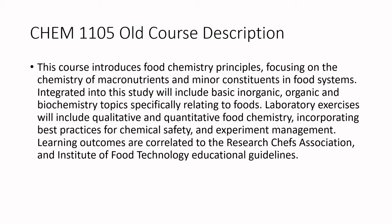I want to walk through one of the course descriptions I wrote years ago and then do a brainstorming exercise together to show the continuous improvement process. This course outline reads: 'This course introduces food chemistry principles focusing on the chemistry of macronutrients and minor constituents in food systems. Integrated into the study will be basic inorganic, organic, and biochemistry topics specifically related to food. Laboratory exercises will include qualitative and quantitative food chemistry incorporating best practices for chemical safety and experiment management. Learning outcomes are correlated to the Research Chefs Association and Institute of Food Technology educational guidelines.'